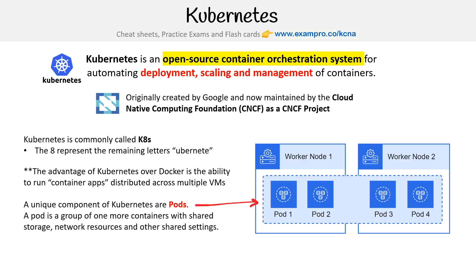A unique component of Kubernetes are pods. A pod is a group of one or more containers with shared storage, network resources, and other shared settings. The idea here — I'm just getting my pen out — is we have a node, which is a virtual machine, and another one, and you have pods running across them. Pods contain containers in them, that's where the containers are. As we look at pods throughout this course, you're going to find that basically most components that we run in Kubernetes are pods. That's why pods are so front and center — because basically everything is a pod.